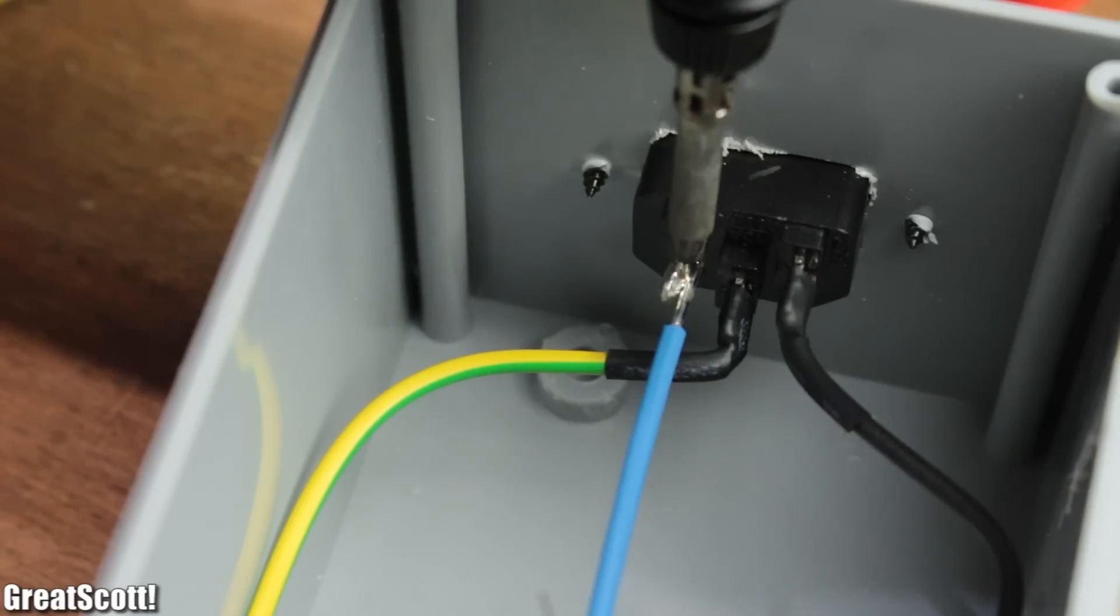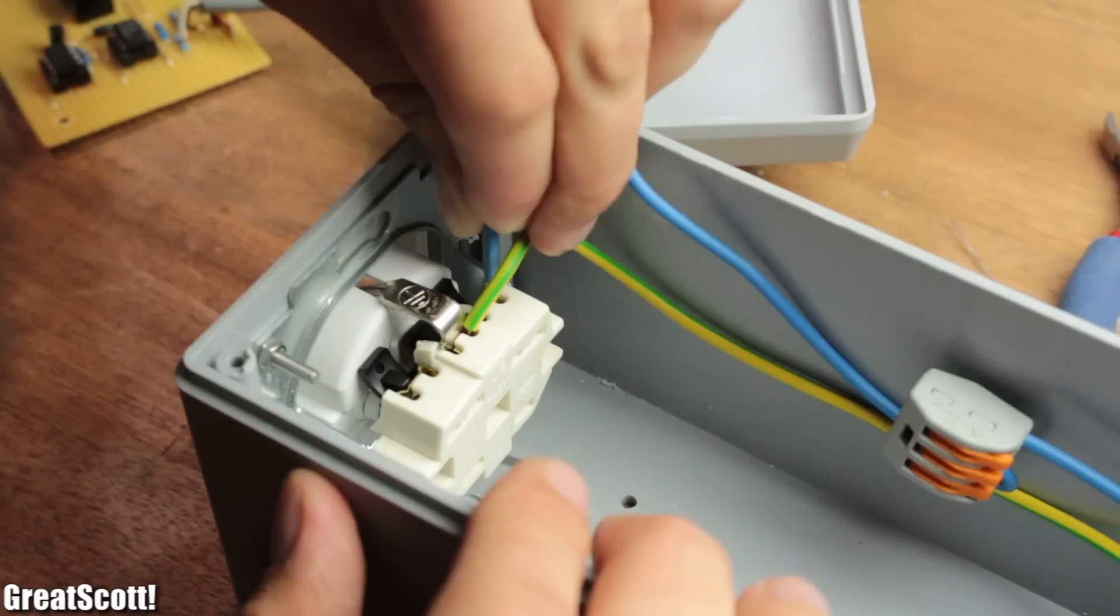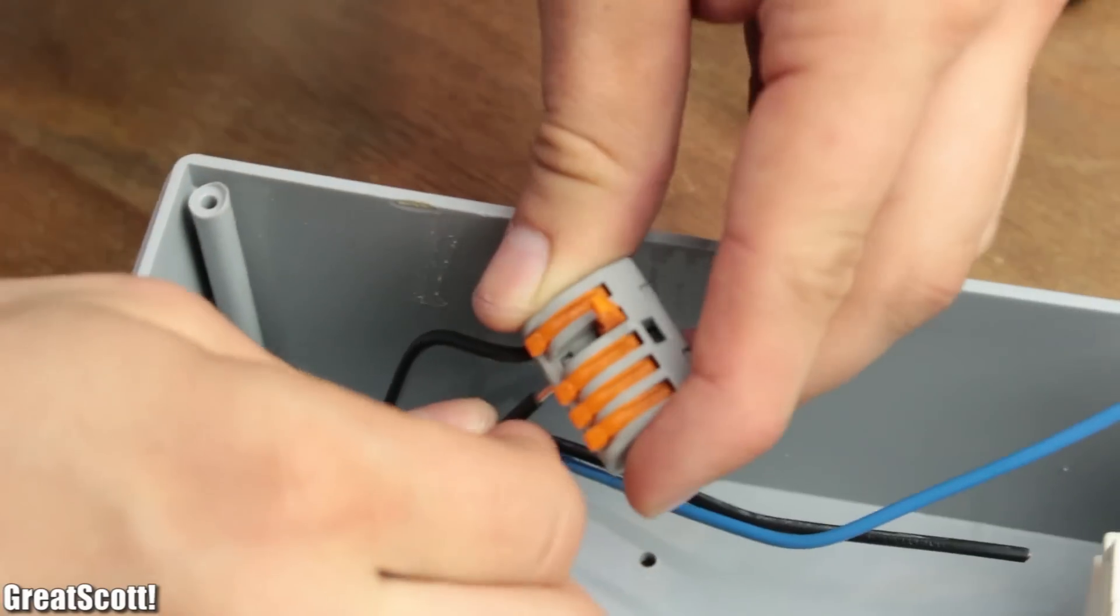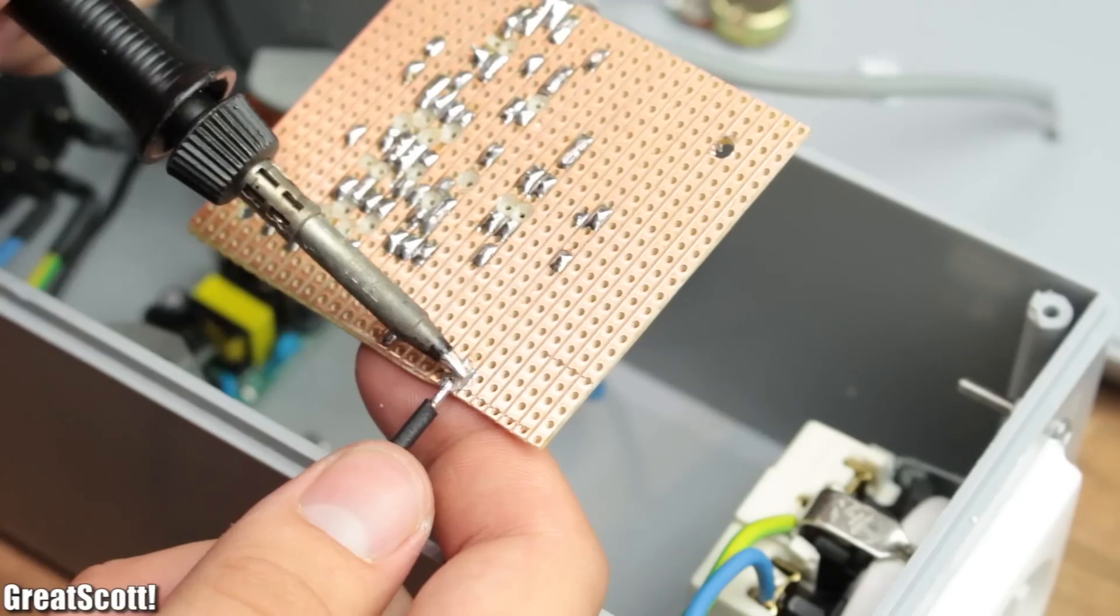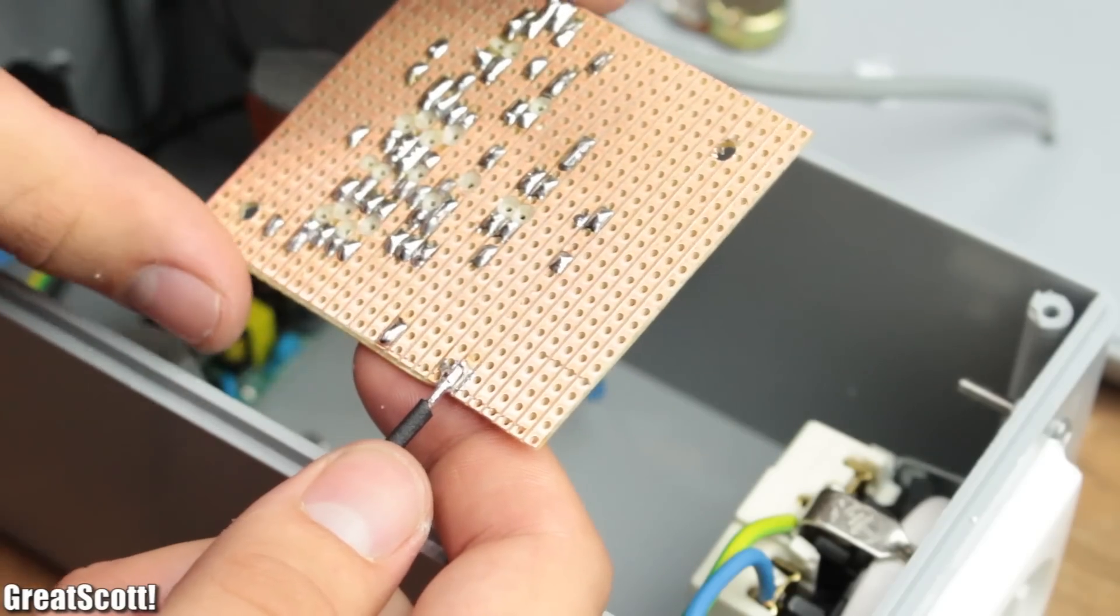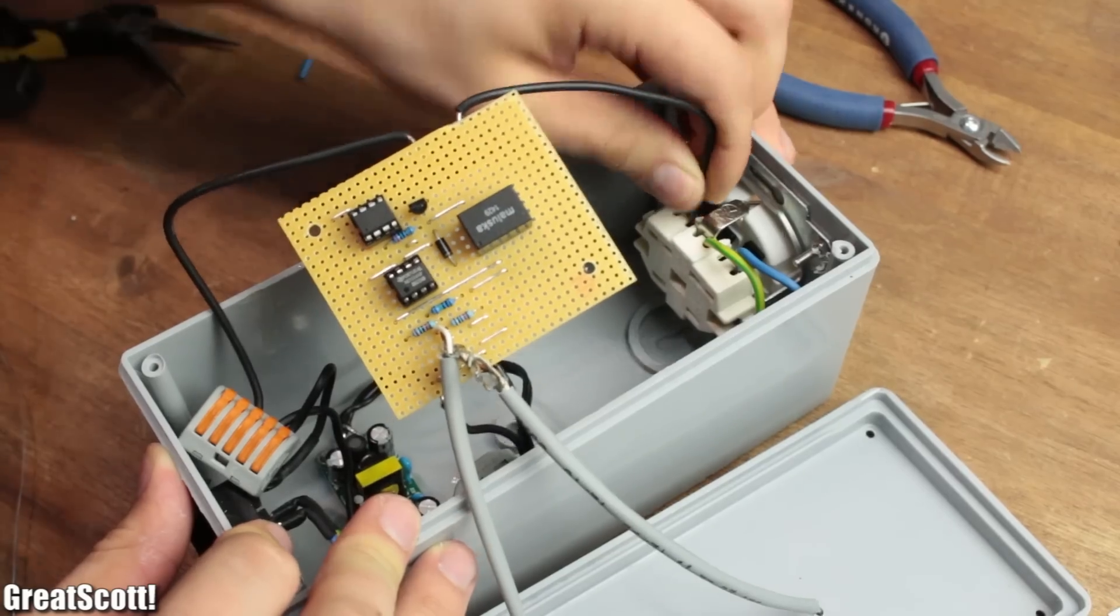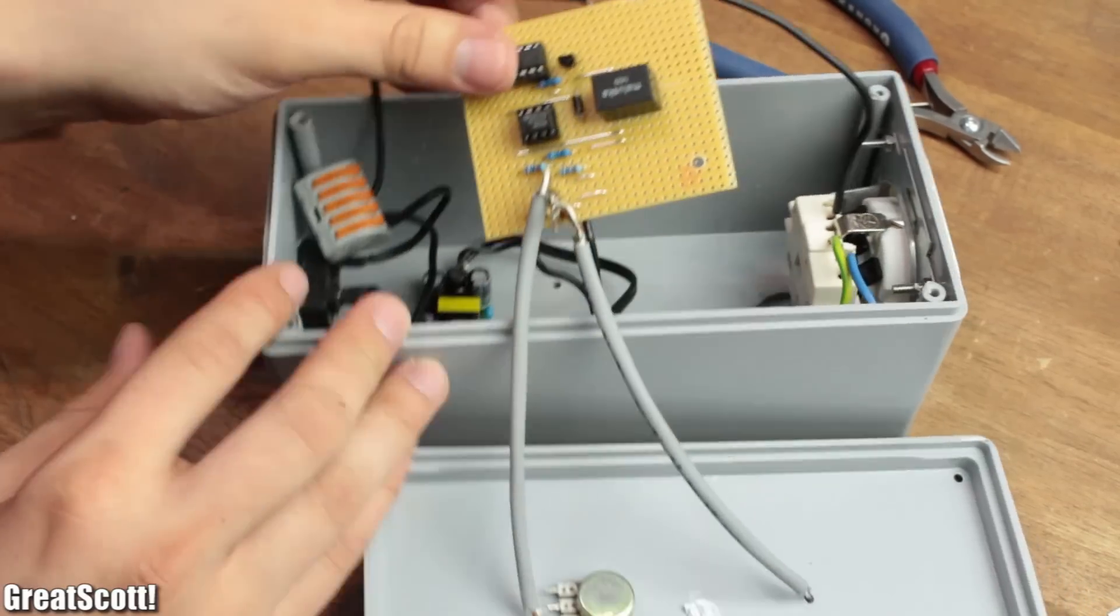Then I mounted the potentiometer and microphone and used solid 1.5mm² wire to connect earth to earth, one side of the AC input to the power supply and one side to the outlet, and the other side of the AC input to the power supply as well and the directional contact of the relay. The other side of the contact then connects to the other side of the outlet. And the wiring is done.